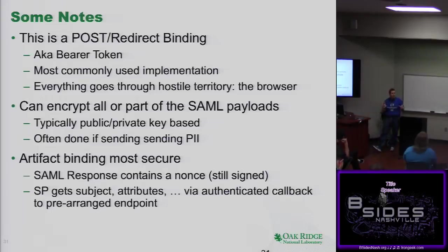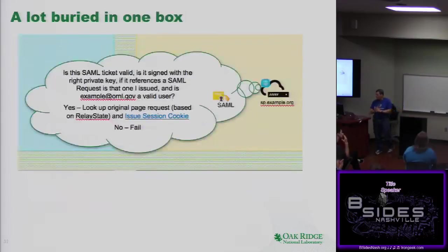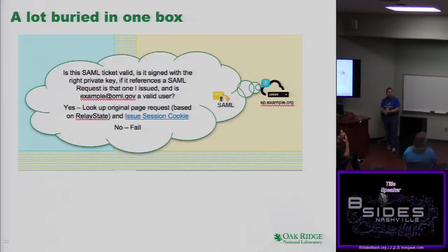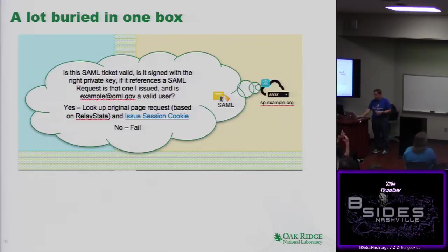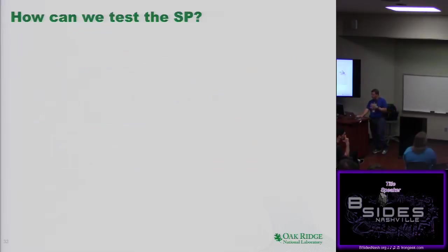Artifact binding is useful in some cases but can't always be used. There is a lot buried in this one box about what the service provider should be doing. If anyone has done signed messages or asymmetric cryptography, it's easy to make mistakes. Let's dig into what that SP should be doing and ask how we can test it.